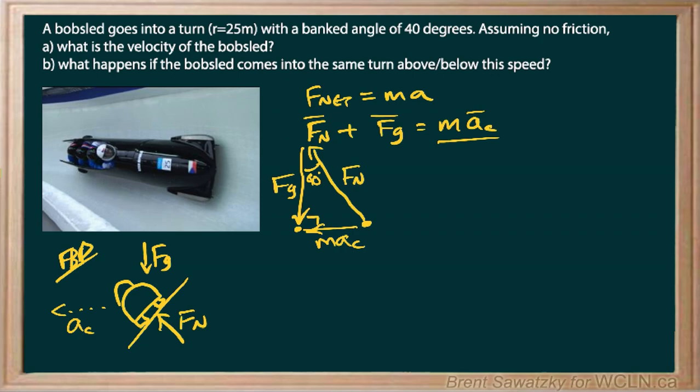So let's see what we can figure out from this diagram. So we can use fn as our hypotenuse and just use a little bit of trig. And we can figure out that M-A-C is just going to be fn sine 40.